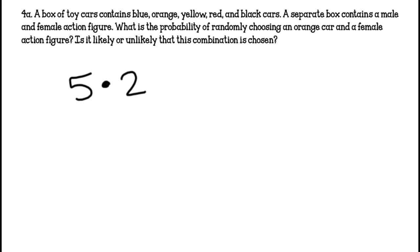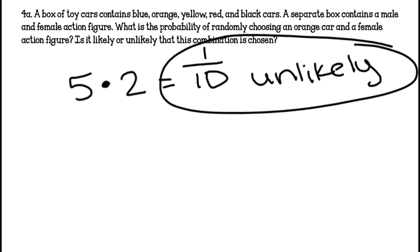What is the probability of randomly choosing an orange car and a female action figure? Is it unlikely or likely that this combination is chosen? So again, there would only be one of these combos. So you'd get 1/10 and that is unlikely. So you'd circle it and that's your answer.